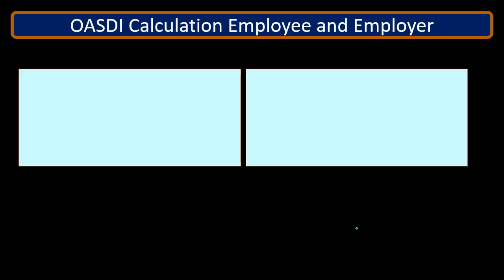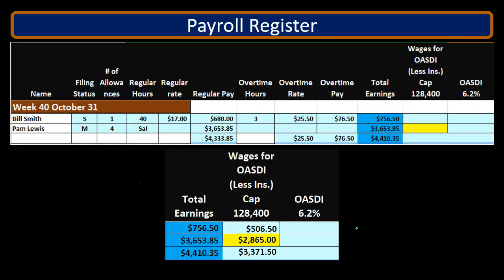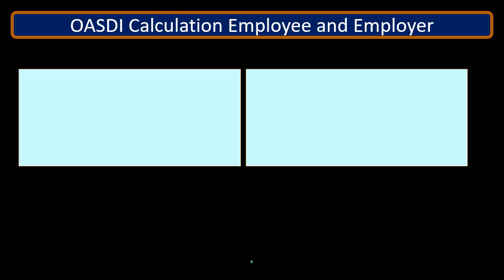When we do the calculation for social security, we'll start with the total to see how a flat tax works — as opposed to a progressive tax like the federal income tax. We're first going to calculate social security based on the total OASDI wages of $3,371.50 for all two employees.